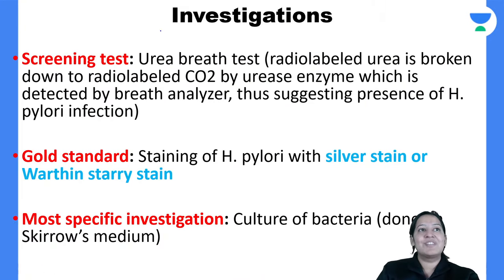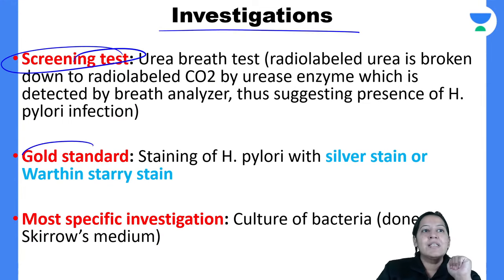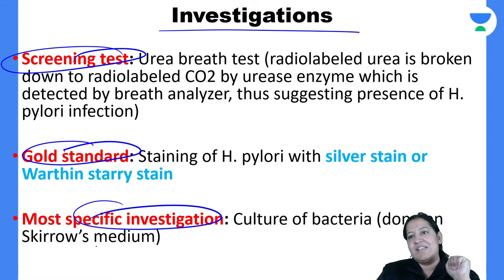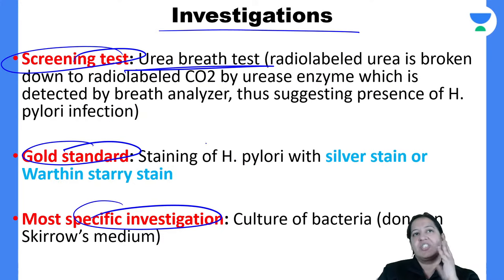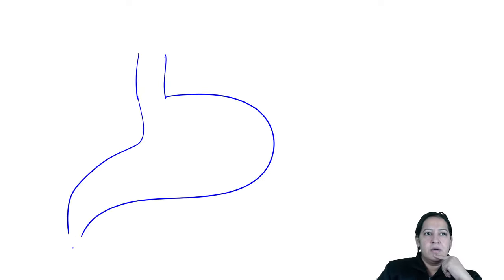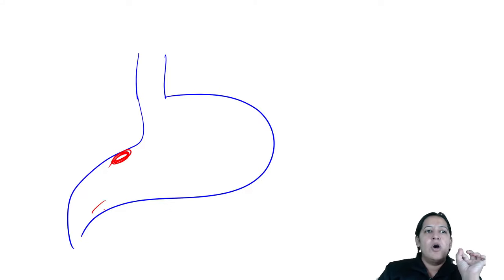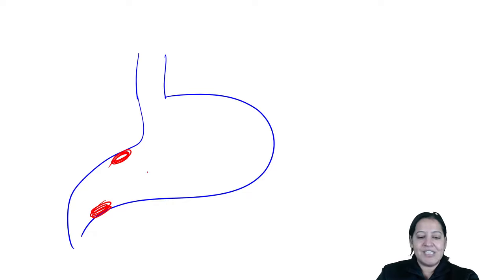Now the investigations for peptic ulcer. There are three investigations: one is a screening test, one is the gold standard, and one is a specific investigation. The screening test is the urea breath test. Now 90% of duodenal and gastric ulcers are associated with H. pylori. The urea breath test works as follows.